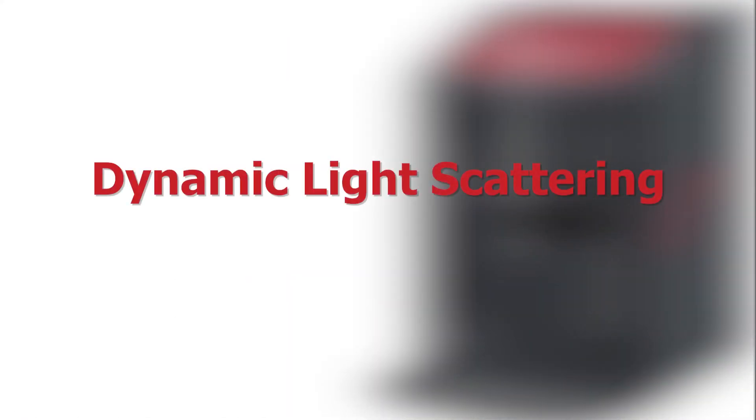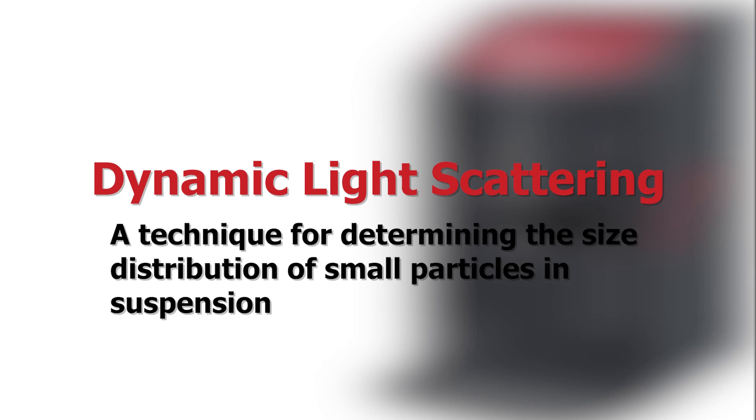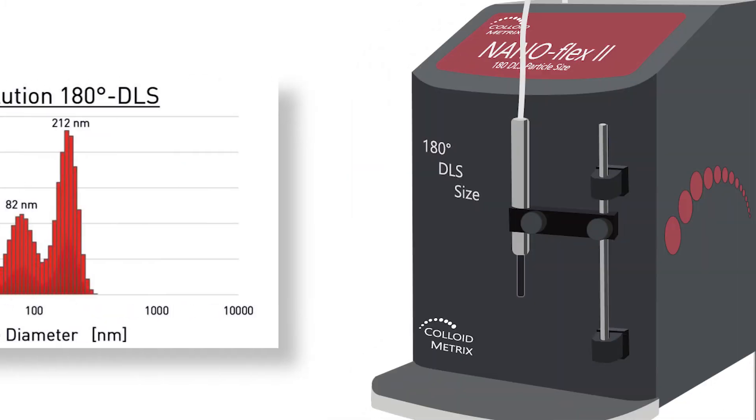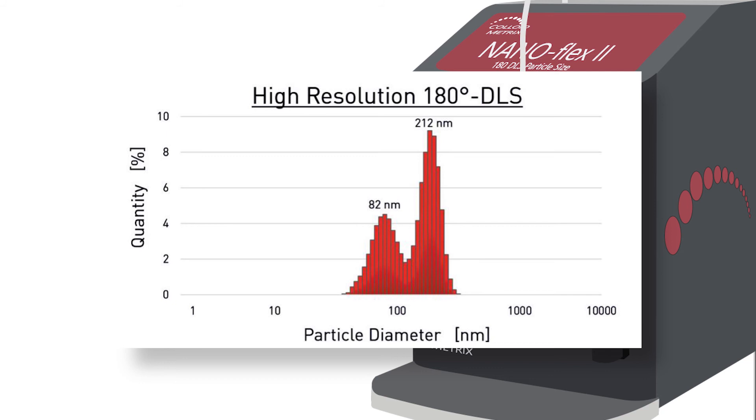Dynamic light scattering is a widely used technique for determining the size distribution of small particles in suspension or polymers in solution. The NanoFlex is a particle size distribution measurement system with 180 degrees of dynamic light scattering, enabling high dynamic range and high resolution in one measurement.